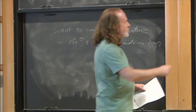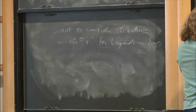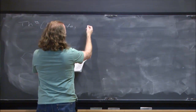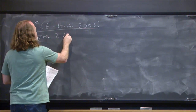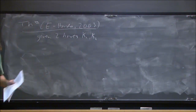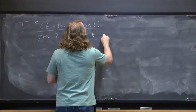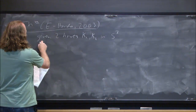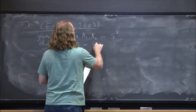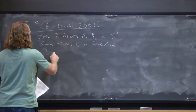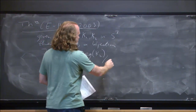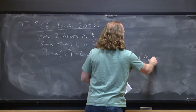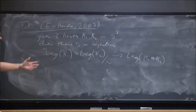Let me mention the first such theorem that I know of. Several years ago, Kohanda and I — this was published in 2003 — proved the following. Given two knots k1 and k2, just topological knots in S3, there is a bijection from Leg(k1) cross Leg(k2) modulo sum equivalence to Leg(k1 connect sum k2). The simplest operation you know about knots is given two knots, you can form their connected sum — just put them next to each other, erase two arcs, and glue the endpoints.